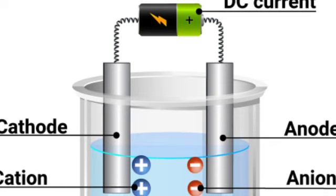Distilled water becomes a conductor of electricity when acid, salt, or base is dissolved in it. When electric current passes through a conducting solution, does it produce some effect on the solution? Can electric current cause a chemical change? When electric current passes through a conducting solution, what changes are produced?